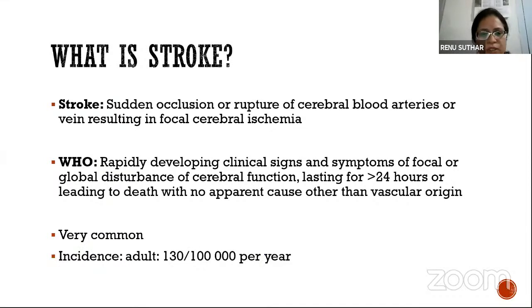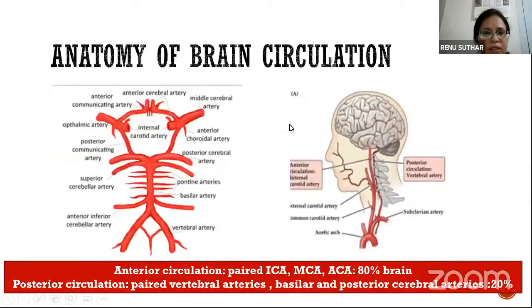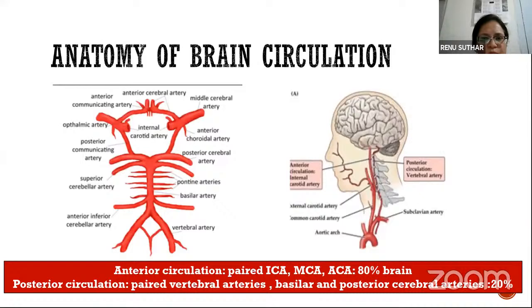Stroke is very common. In adults, the incidence is about 130 cases per 1 lakh population per year — very high incidence. I'll start with the anatomy of blood circulation and then move specifically to pediatric stroke.